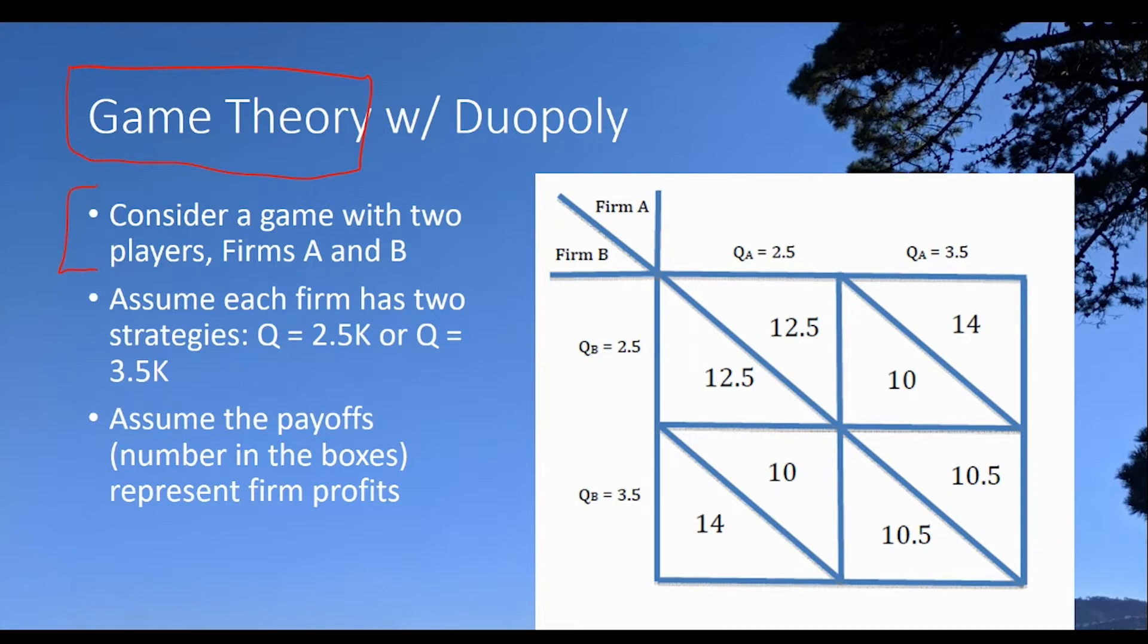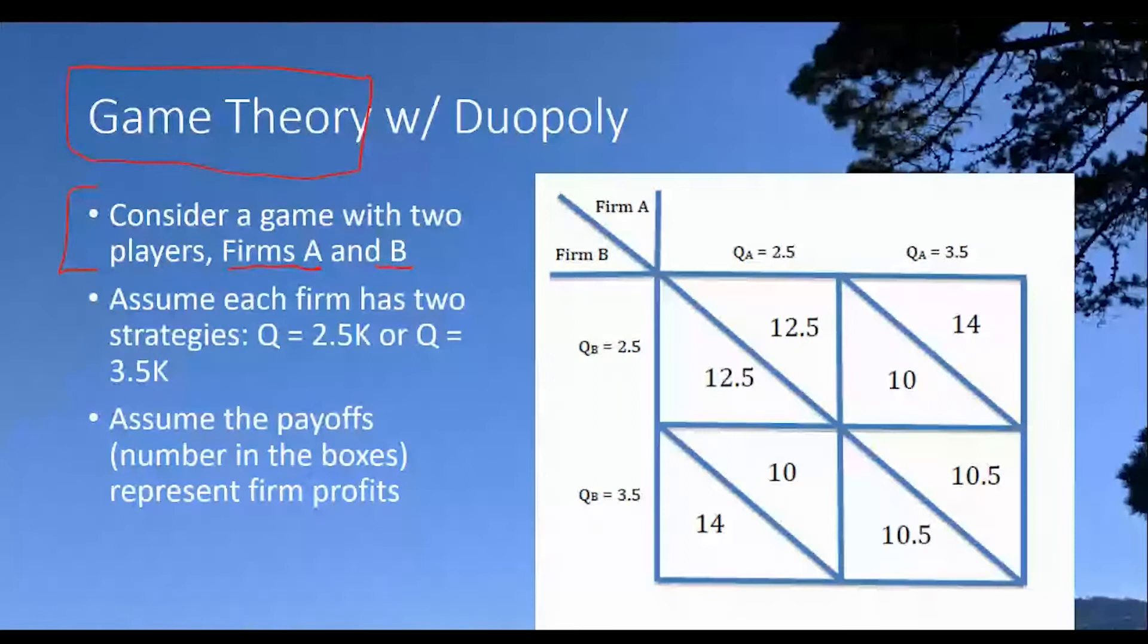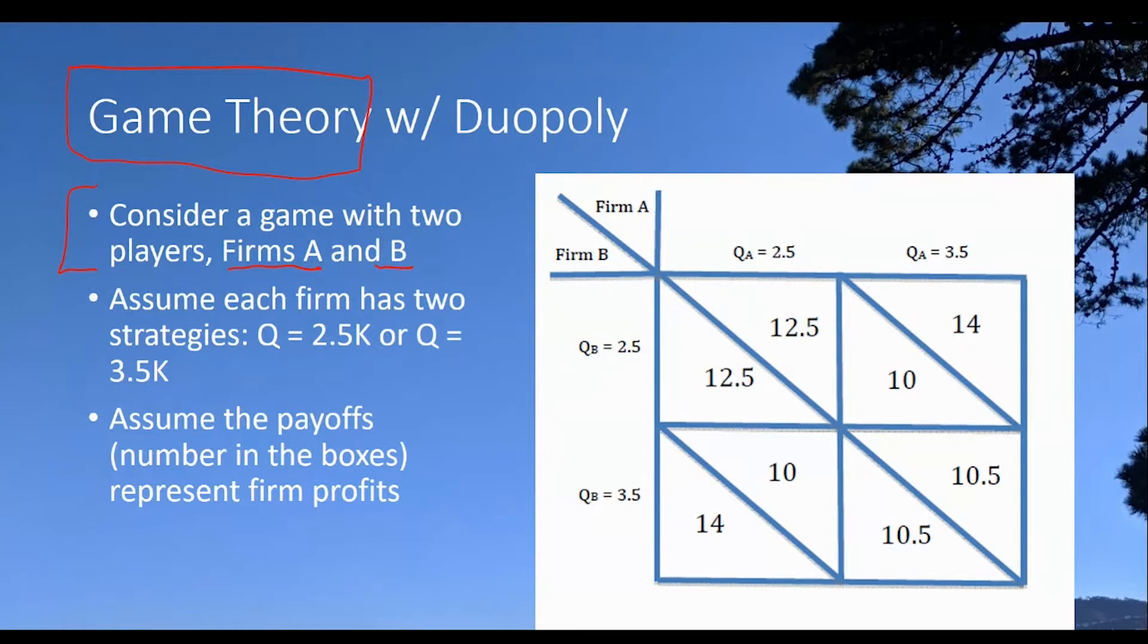So assumptions. First, let's consider a game between two players, and we're going to let the two players be firm A and firm B. Now, we're going to assume that each firm has two strategies. And this is like in a game, you always have choices that you have to make. And the choices can be very complicated. But here, the choices are actually quite simple.